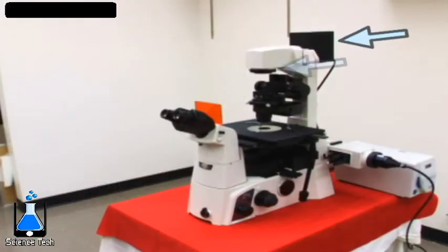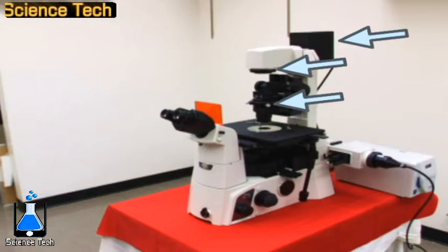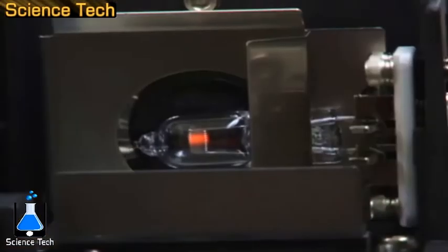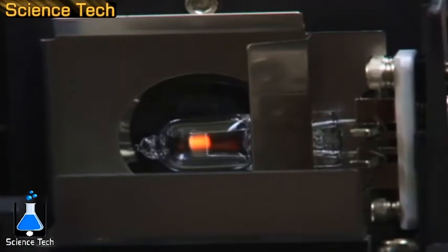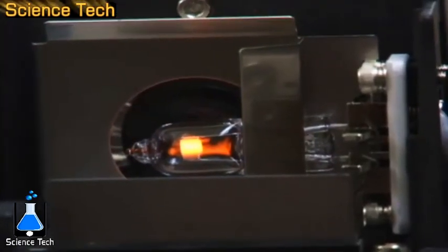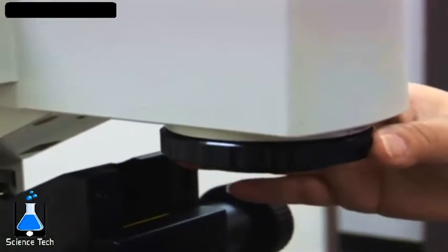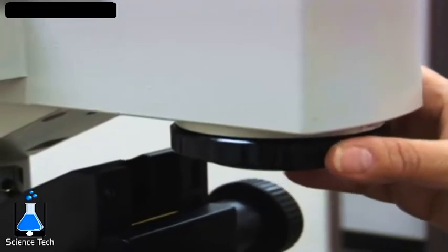The light source, field diaphragm, aperture, and condenser are all responsible for producing and shaping the light that is delivered to the sample. The light source is typically a low voltage halogen bulb that can be adjusted to control light intensity. The light then passes through a variety of filters and into the field diaphragm.